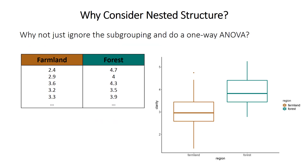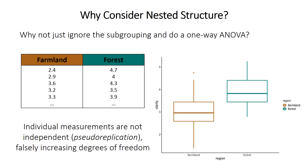But why bother with this structure? Why can't we just ignore the subgroupings and do a regular one-way ANOVA or even a t-test — group up all the data from farmland lakes and all the data from forest lakes and run it? To understand why this isn't a good idea, think back to the assumptions of ANOVA. Because there's nested structure in the data, it's quite probable that some lakes just have inherently higher or lower clarity values than others. As a result, having multiple measurements from one lake means many individual measurements are not independent of one another, and that violates the assumptions.